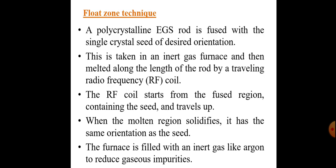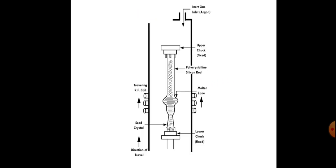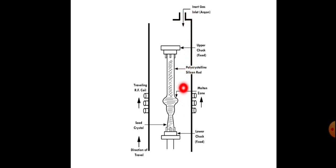A polycrystalline EGS rod is fused with a single crystal seed of desired orientation. This is taken in an inert gas furnace and then melted along the length of the rod by a traveling radio frequency coil. The complete setup is enclosed within a glass environment to avoid the presence of other gases. Inert argon gas is supplied as input to this glass environment to control the process.